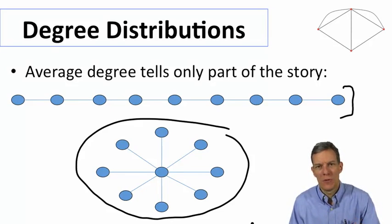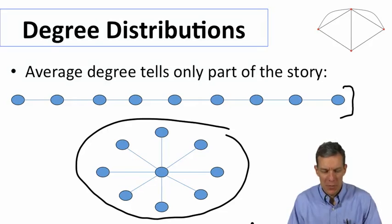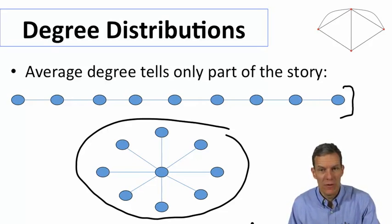What we looked at in terms of the GNP graph had most nodes with similar order of magnitude degrees to each other. Let's look at this in a little bit more detail.